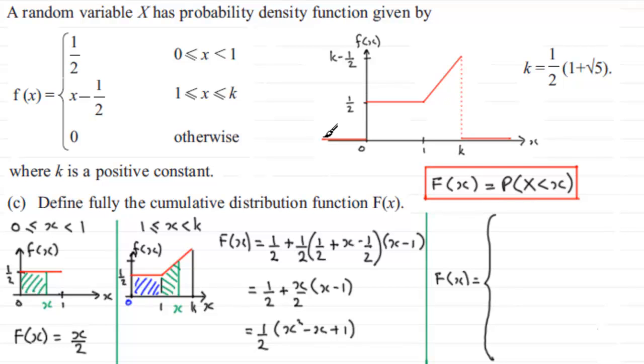Now when x is less than 0, the probability of having a value less than 0 is going to be 0. So it's going to be 0 then when x is less than 0.